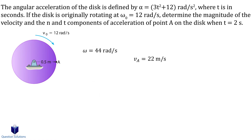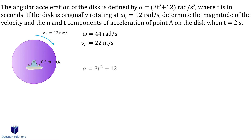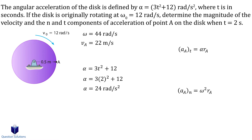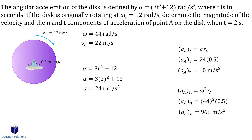Now we need to find the normal and tangential accelerations. First, let's figure out the angular acceleration when t equals 2 seconds — we just plug 2 seconds into the equation given to us. Now that we know the angular acceleration, we can find the tangential and normal components. For tangential acceleration, we use angular acceleration; for normal acceleration, we use angular velocity. We're still looking at point A, so the distance from the center to point A is 0.5 meters. Plugging in all values gives us our tangential and normal accelerations.